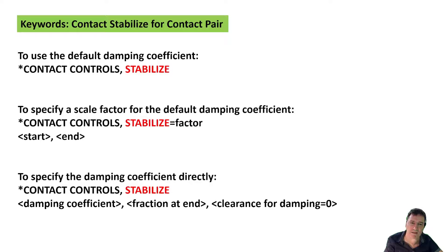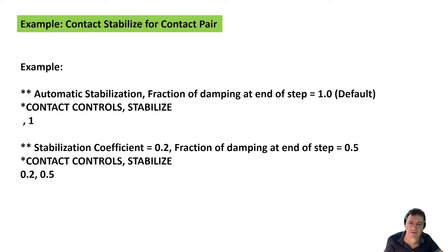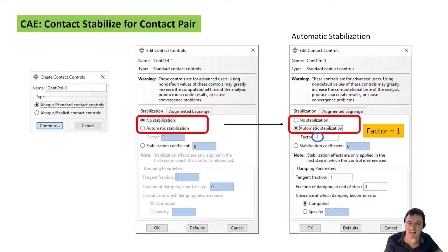Here are some examples for the keyword CONTACT CONTROLS. The first example shows the default automatic stabilization with a constant fraction from beginning to end. The second example shows the fraction of damping beginning with 0.2 and ending with 0.5. In CAE, the contact stabilization for contact pairs can be defined in the contact control definition under automatic stabilization. The default factor is 1 from beginning until the end, and the factor for contact stabilization can be changed over a wide range if needed.